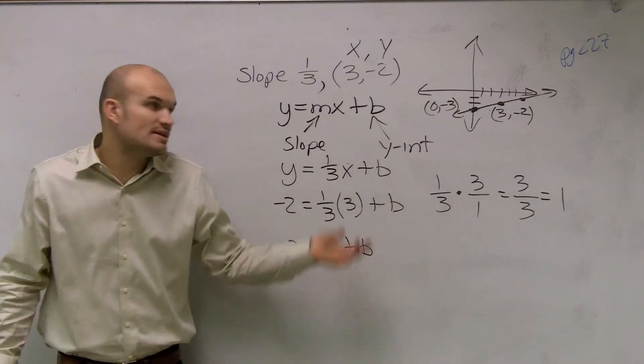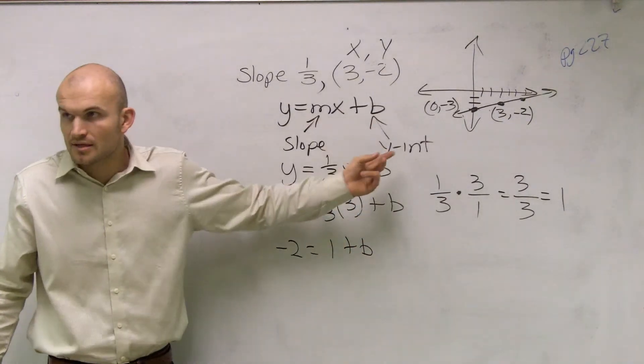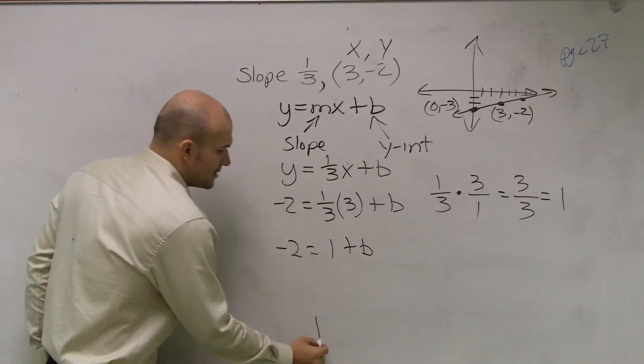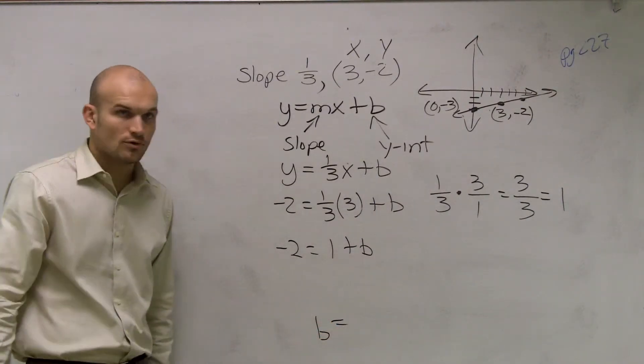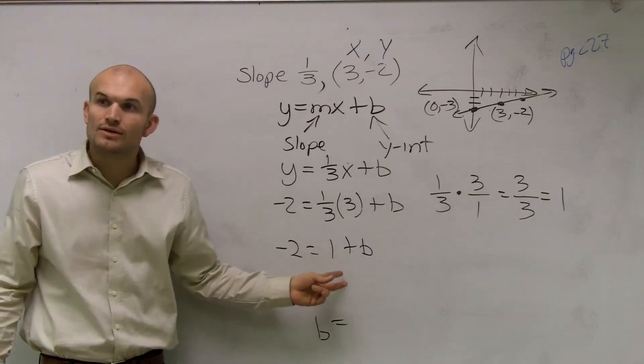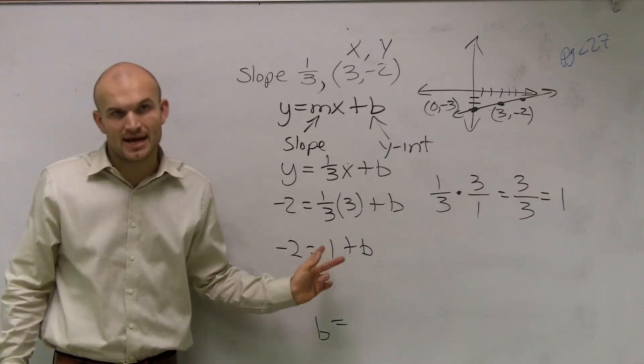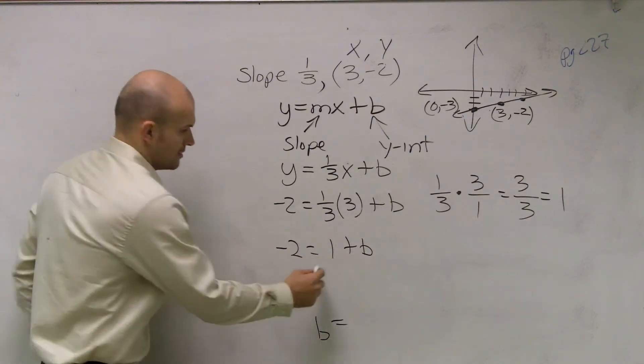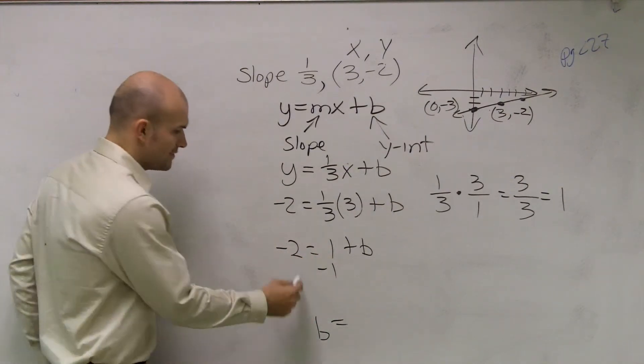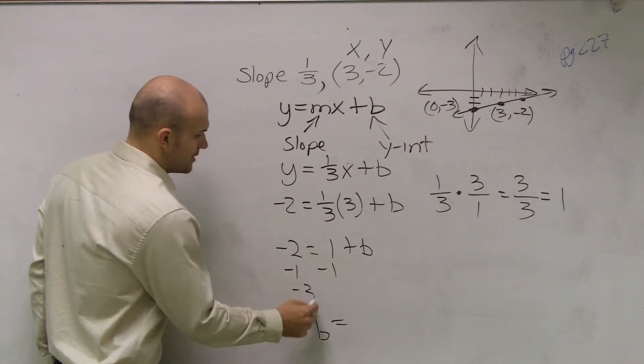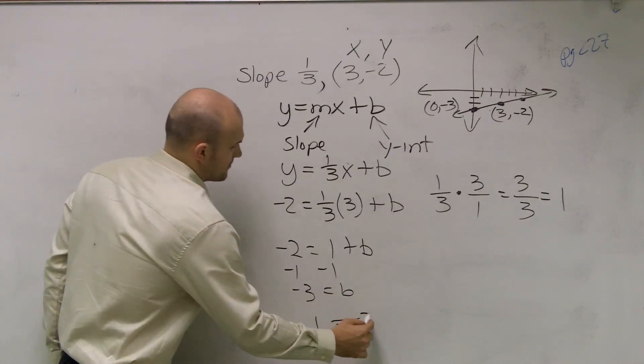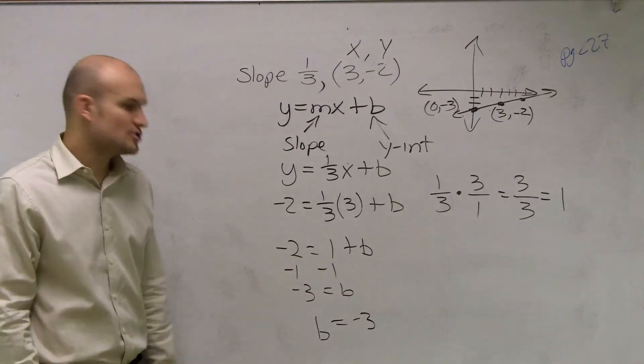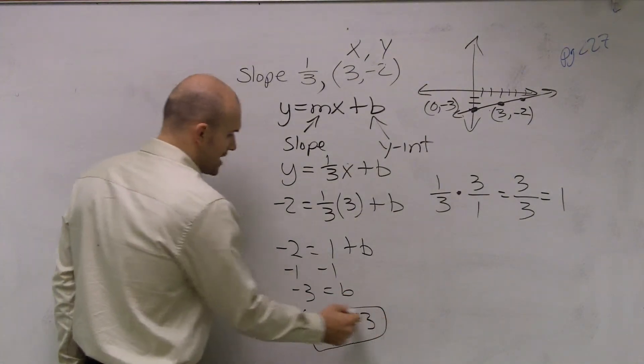Now, you say, well what do I do here next? We still don't know what our b is, right? So you need to solve for b, meaning I need to get b by itself. b equals. What's on the side of b? We have a 1. Is it positive or negative? It's positive. That means I need to subtract a 1 to get rid of that 1 on that side. So whatever you do on one side, you subtract on the other. Negative 3 equals b. Therefore, now my b equals negative 3. So ladies and gentlemen, do I now know what the y-intercept is?